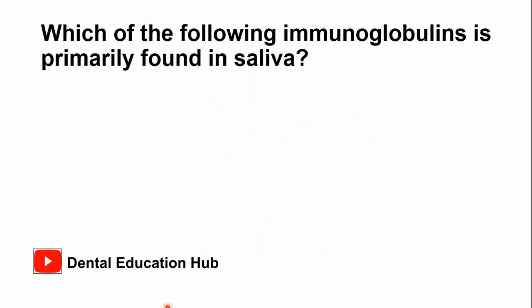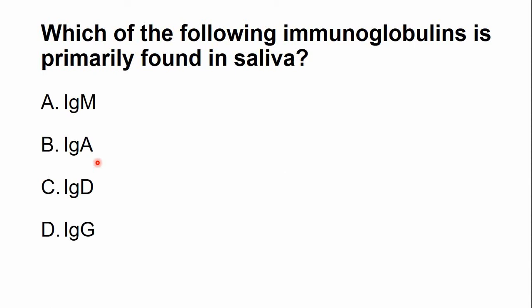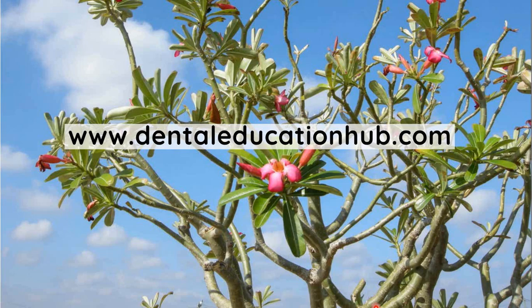Here is a question for you: which of the following immunoglobulins is primarily found in saliva? The options are IgM, IgA, IgD, and IgG. Write the correct answer in the comments below. Also, do give us your feedback in the comments. Thank you very much. Stay blessed.